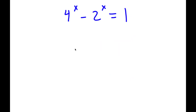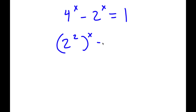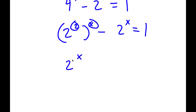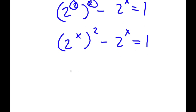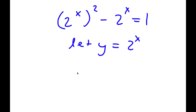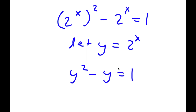In this problem, I have 4 to the power of x minus 2 to the power of x is equal to 1. To solve this, I'm going to rewrite 4 to the power of x as 2 squared to the power of x, because 4 is 2 squared, minus 2 to the power of x equals 1. I can switch the places of these two exponents, giving 2 to the power of x to the power of 2, minus 2 to the power of x equals 1. Now I'm going to let y equal 2 to the power of x, so now I have y squared minus y equals 1.